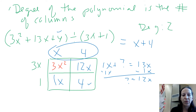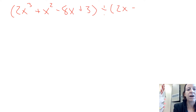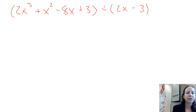Pause the video if you need to and review that problem before we move on. Our second example is 2x cubed plus x squared minus 8x plus 3 divided by 2x minus 3. If you look at other strategies online, the only other way to do this is polynomial long division, and it's awful — this method is way better and very flexible. Since this is a degree 3 polynomial, when we make our box we're going to have three columns.